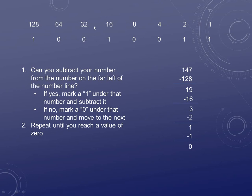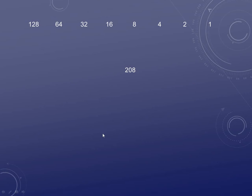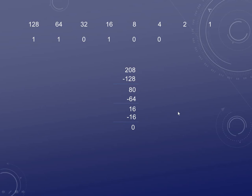This number line is crucial when doing these conversions. Let's take a look at 208. I can take 128 from 208, leaving 80. Can I take 64? Yes, leaving 16. Can't take 32, but I can take 16, leaving 0. Which means all the remaining positions must be 0. That gives us the binary answer for 208.